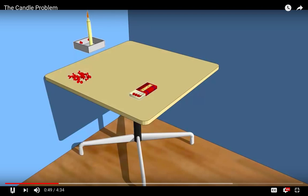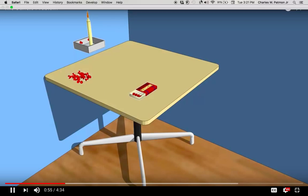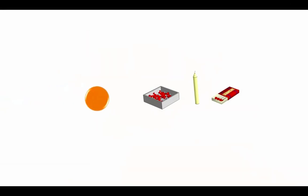Professor Dunker realized that people have difficulty in solving a problem when one element has a fixed function that must be altered. In this case, the problem solver has to be able to realize that the box is not just a container for the tacks, but that it can also be used to hold the candle on the wall.